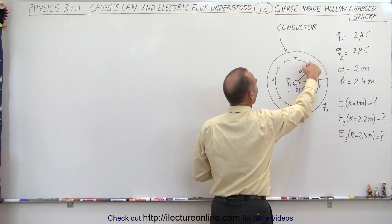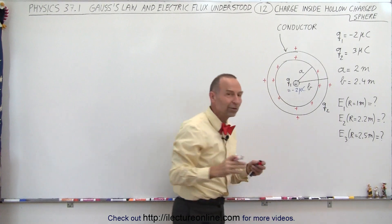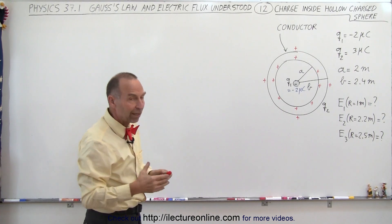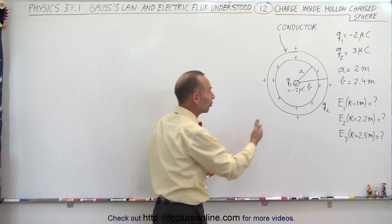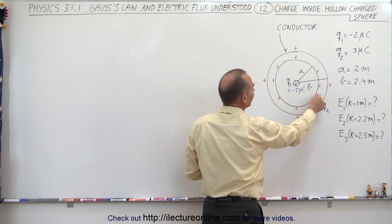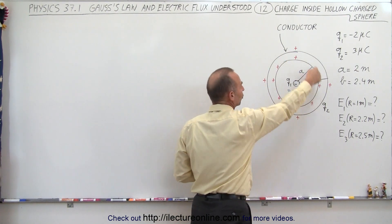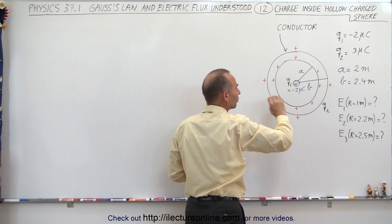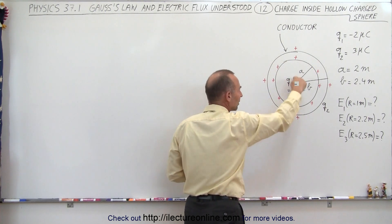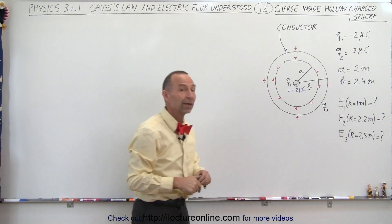So if 3 microcoulombs corresponds to 12 of these representative charges, then 8 of them — two thirds — will reside on the inner surface, and one third will reside on the outer surface. So there's a total of 3 microcoulombs on the outside spherical conductor. However, 2 of the 3 microcoulombs will reside on the inner surface because they're being attracted to the negative 2 microcoulombs, and on the outside surface there will be 1 microcoulomb.